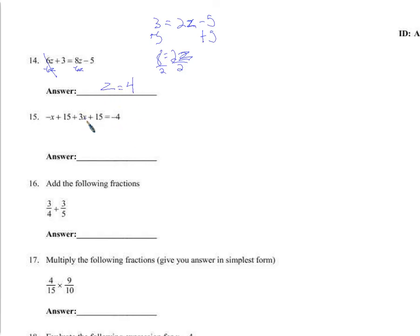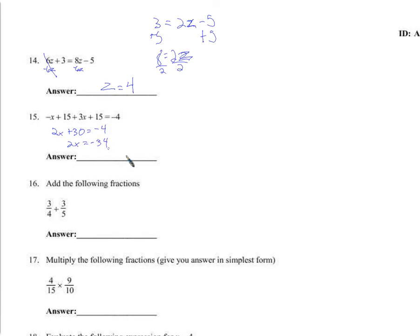Here you don't have variables on both sides, but you do have two instances of variables. We have a 3x and a negative x — 3x minus x is 2x. And 15 plus 15 is 30, so you could combine those. Subtract 30 from both sides — that leaves 2x by itself and you get negative 34. Divide by 2 on both sides and x is negative 17.